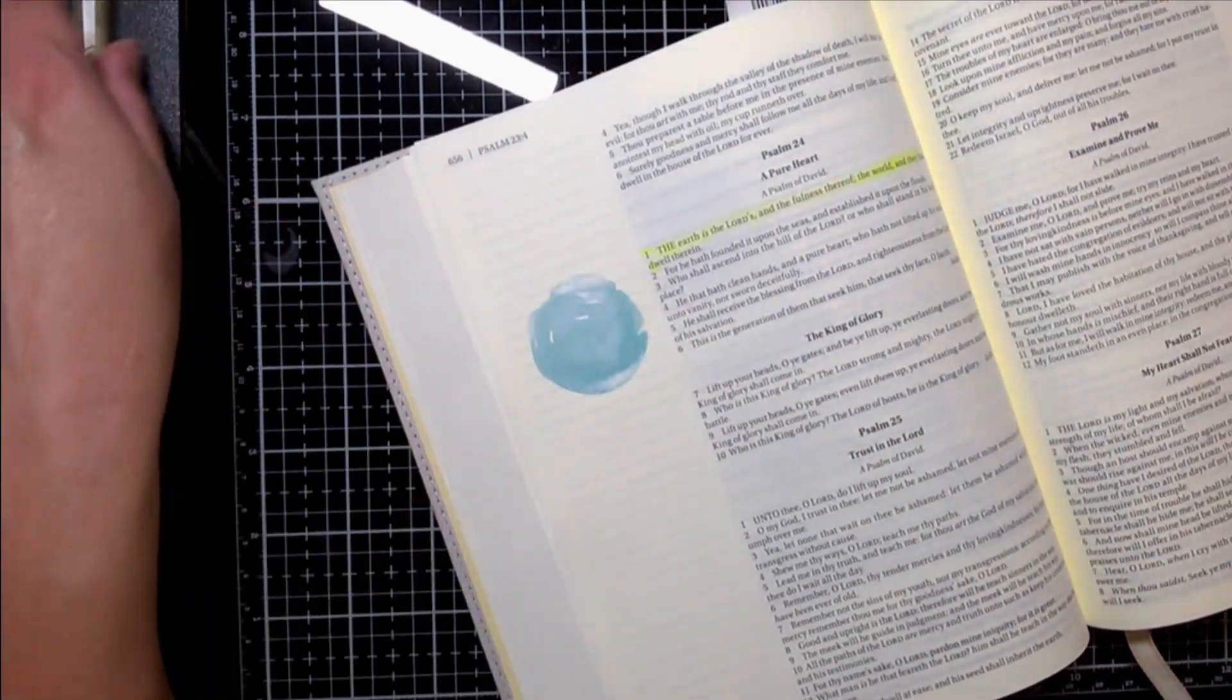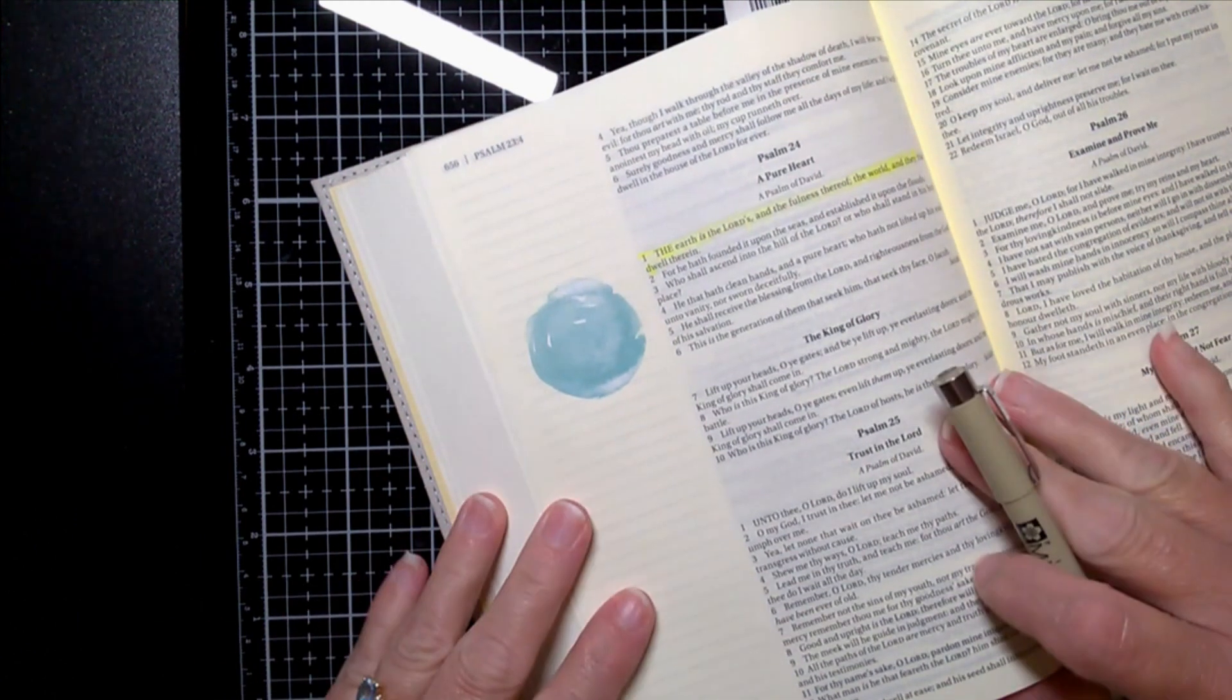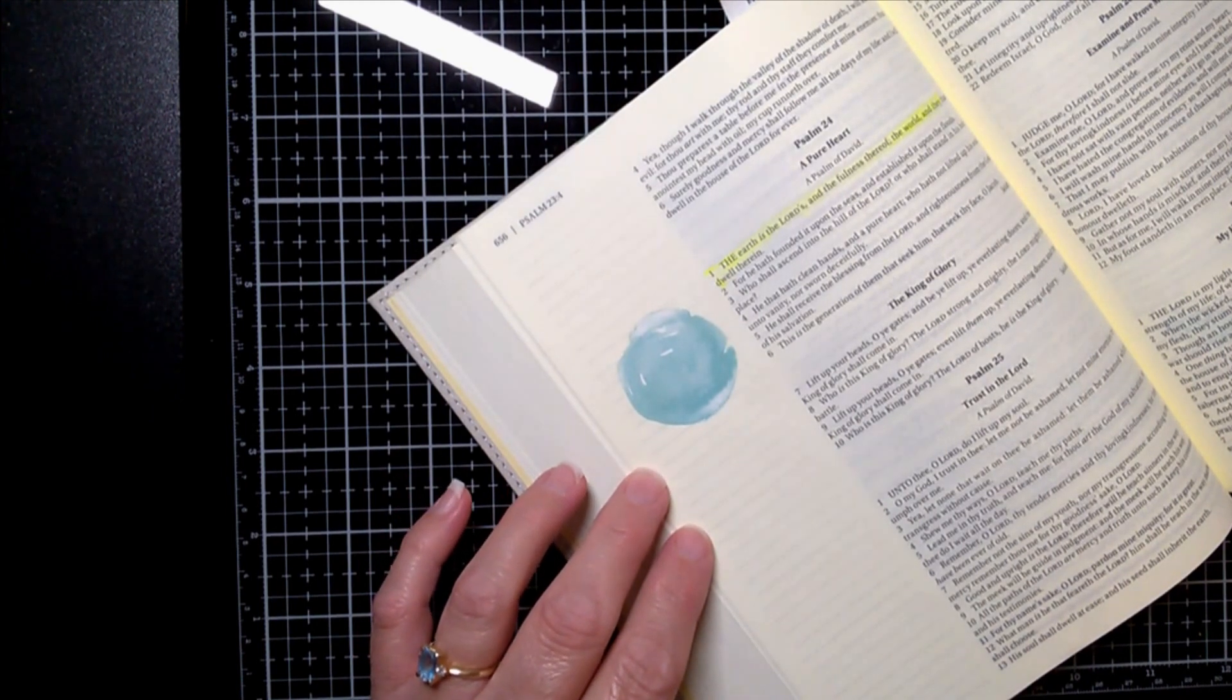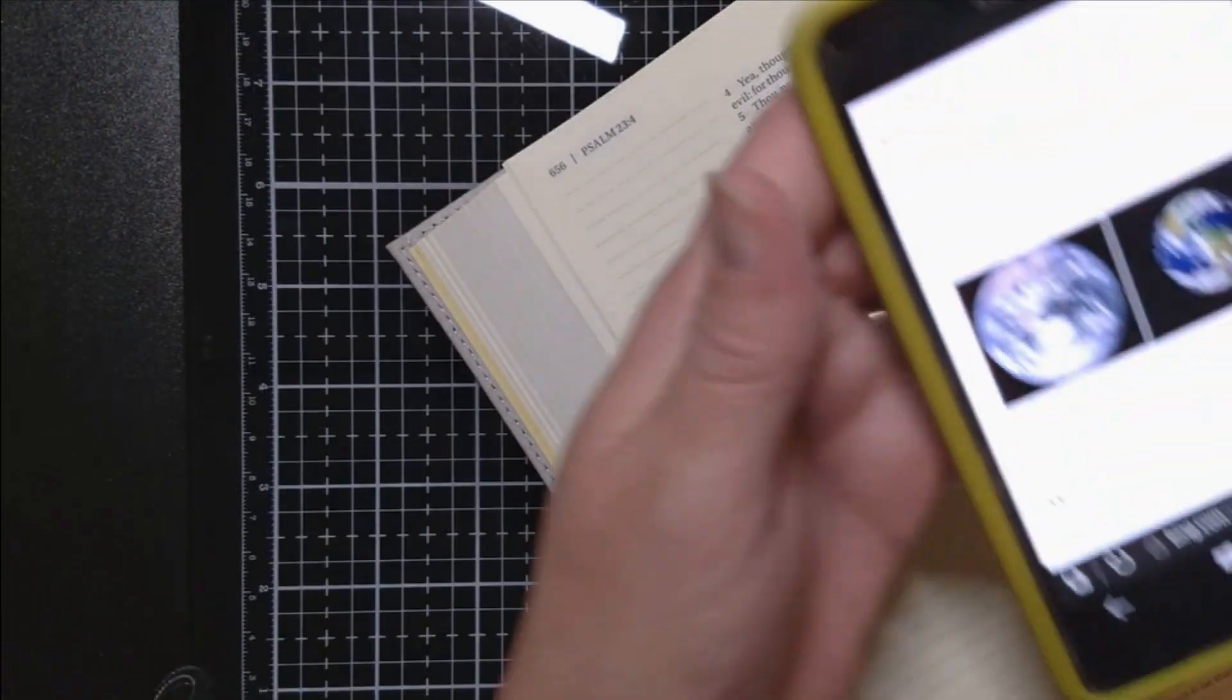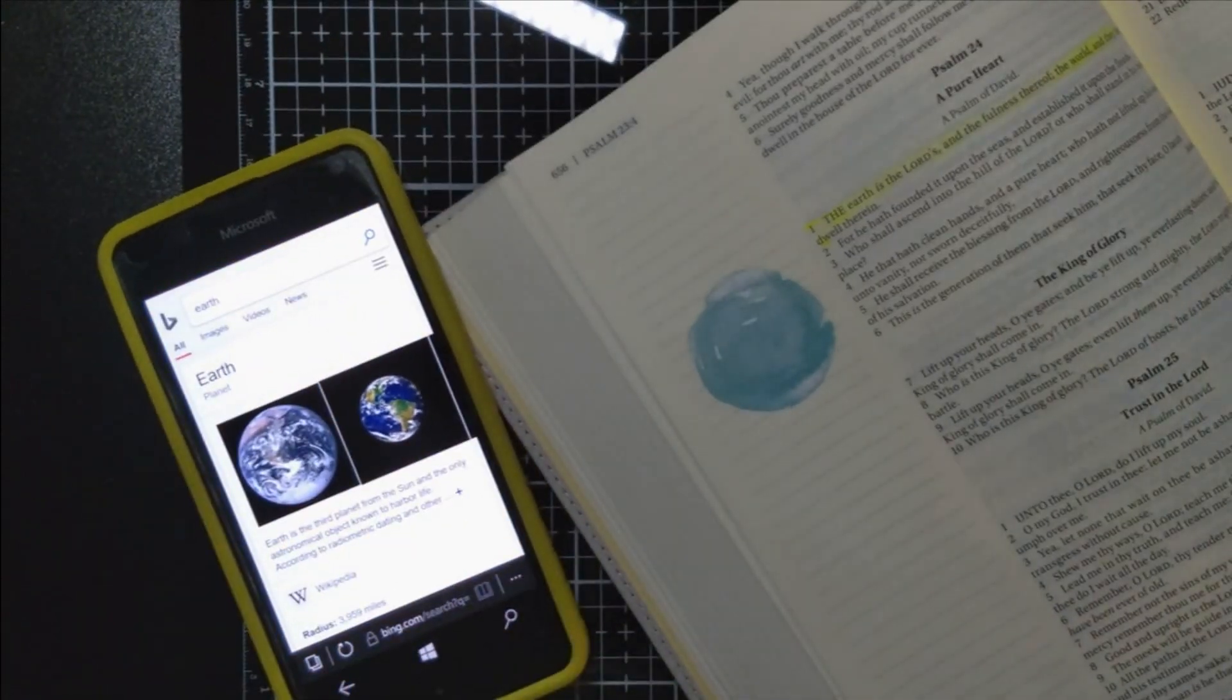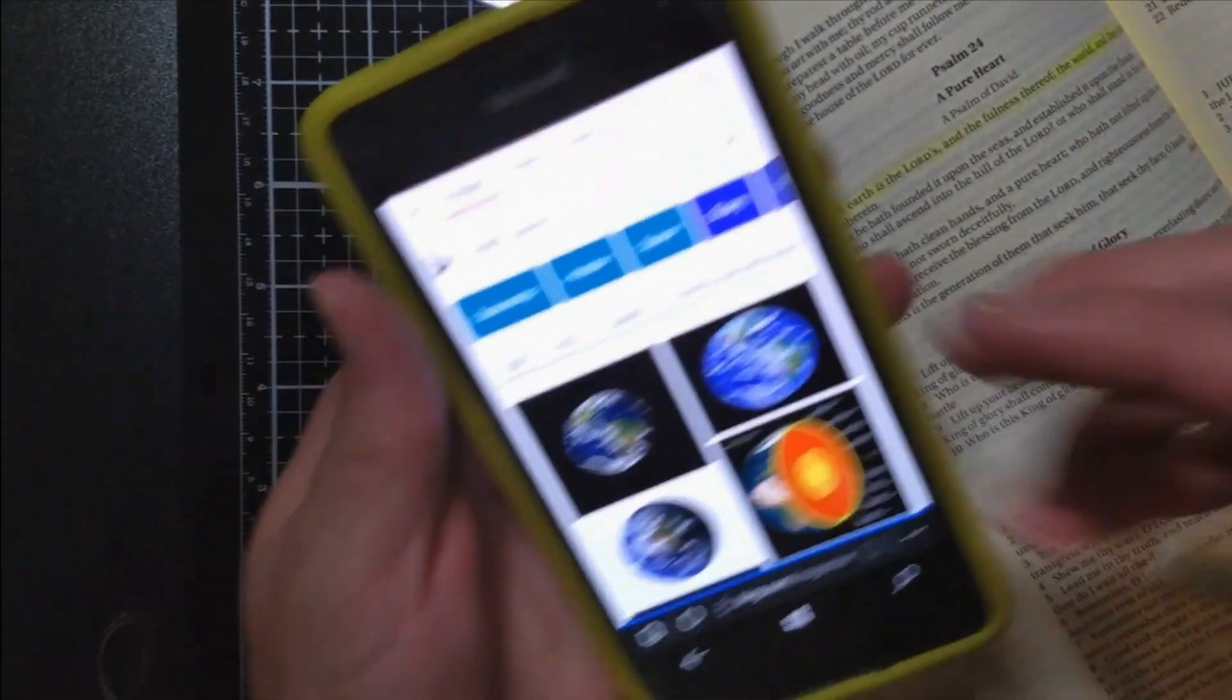Now I'm going to look for a picture on my phone to see if I can find a picture of the earth so I can draw something on here that looks like the earth. Okay, so here's a picture of the earth and I'm going to try to do, I need a bigger picture of that.